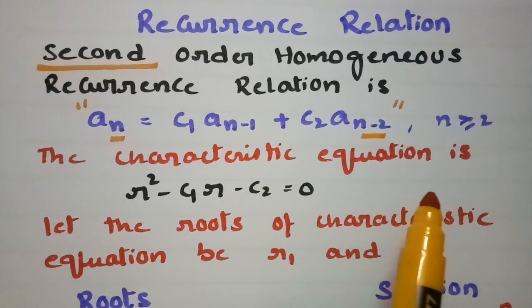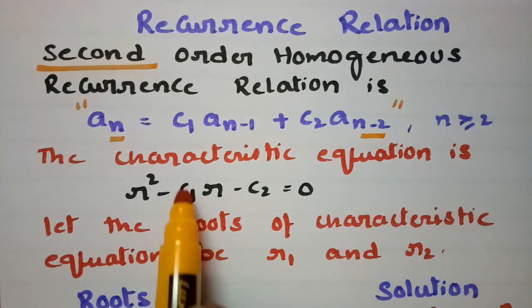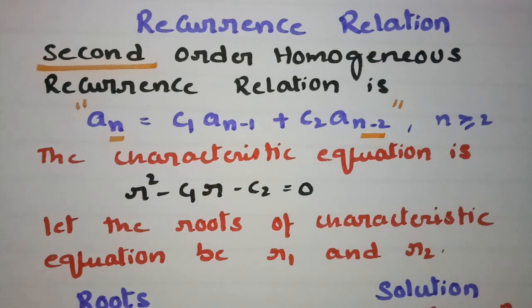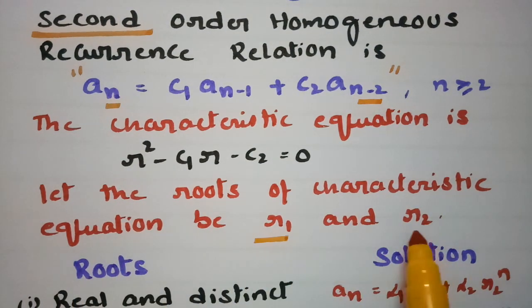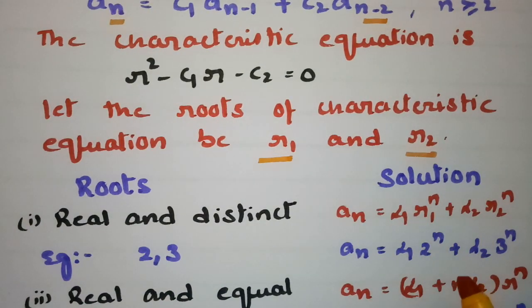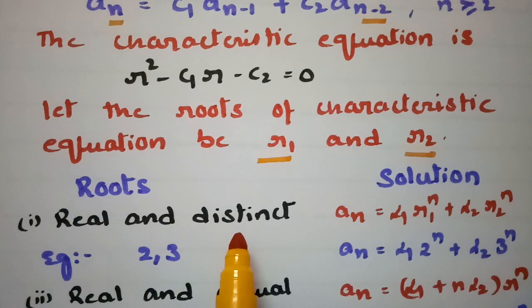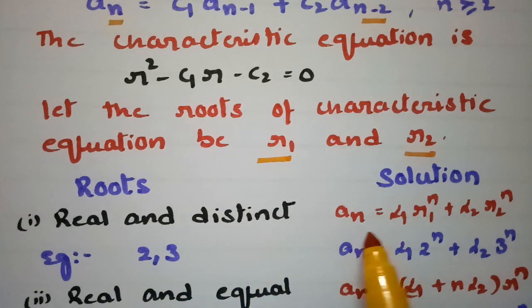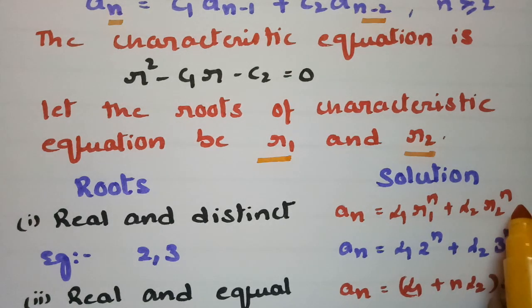To find the characteristic equation: the characteristic equation is R² - C1·R - C2 = 0. After finding this, we find the roots. Let the roots of the characteristic equation be R1 and R2. If the roots are real and distinct — for example 2 and 3 — the solution is An = α1·R1^n + α2·R2^n, which can be written as α1·2^n + α2·3^n.